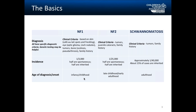The age of onset for each condition is a little different. In NF1, we often can make a diagnosis as early as infancy, and we expect to be able to do so at least by early childhood, though there are exceptions. In NF2, it is often diagnosed anywhere from late childhood through early adulthood. In schwannomatosis, it is largely diagnosed in adults.